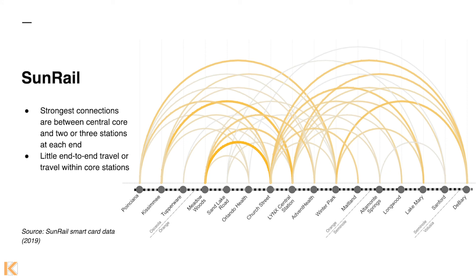So we instead resorted to looking at the SunRail smart card data — where people tap in and tap out — and developed this arc diagram showing the flows between each station. I like to approach this with the 'squint' approach: if you just squint your eyes at it, you get the big picture. What comes out is that the stations in the middle — Church Street, Link Central, Edmond Health, and Winter Park — are really the core of the system and have the most attraction with stations toward the end of the lines. There's not a lot of end-to-end activity or activity from the inner ring suburbs to the core.